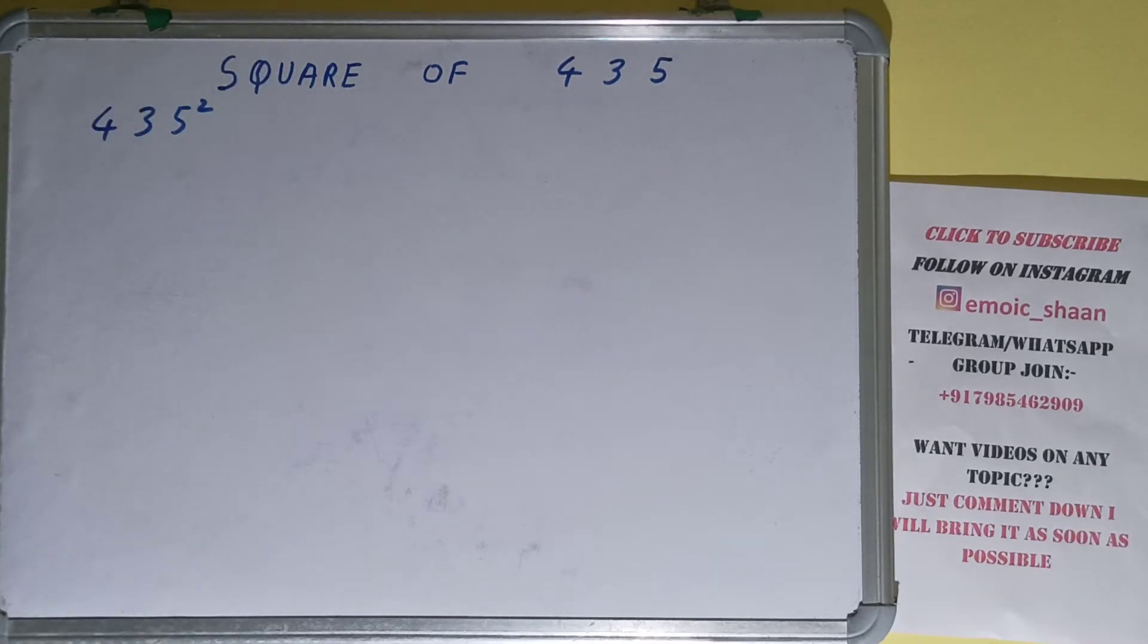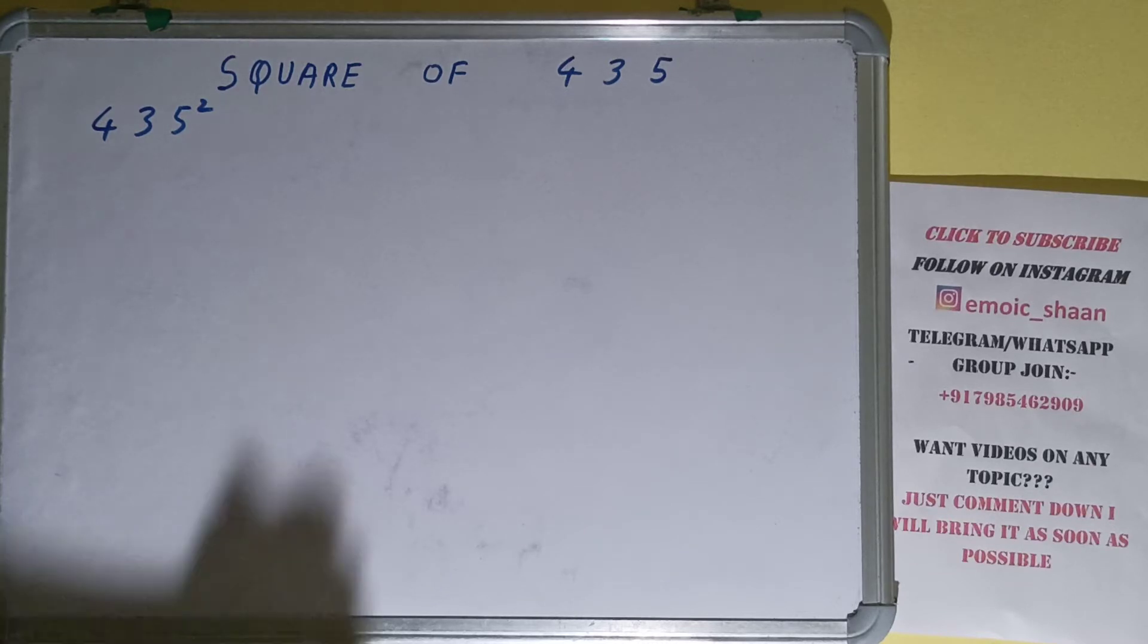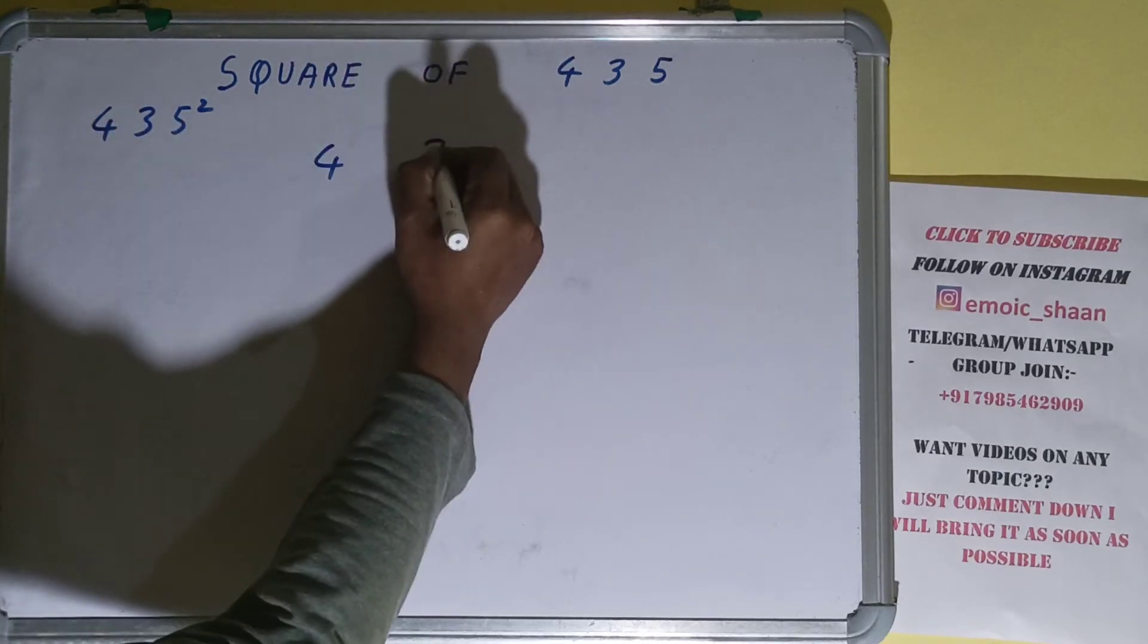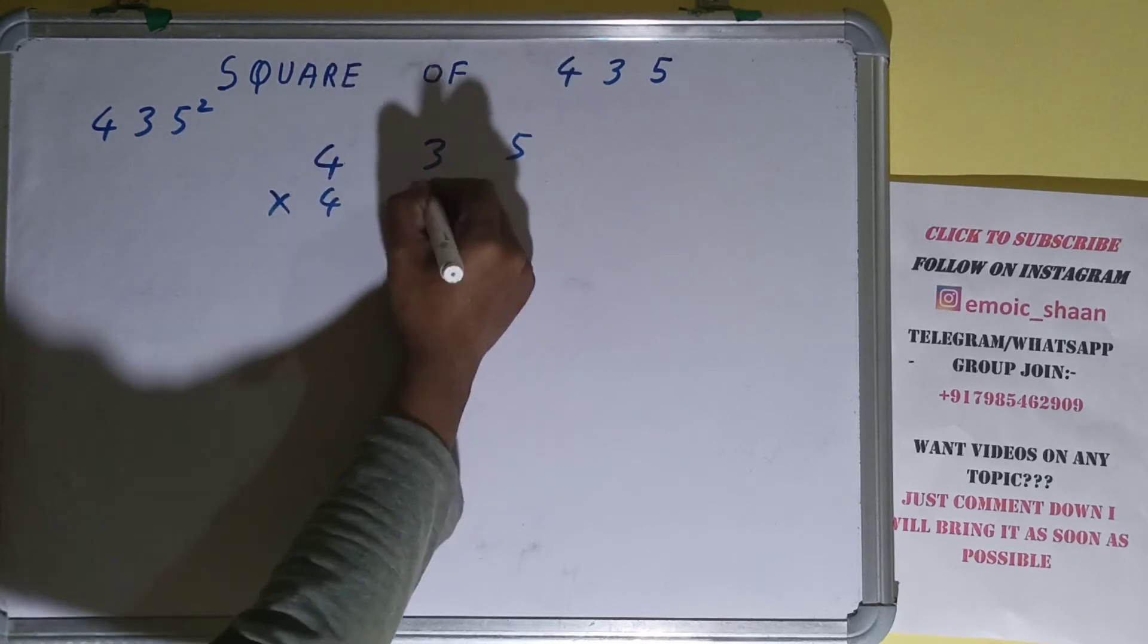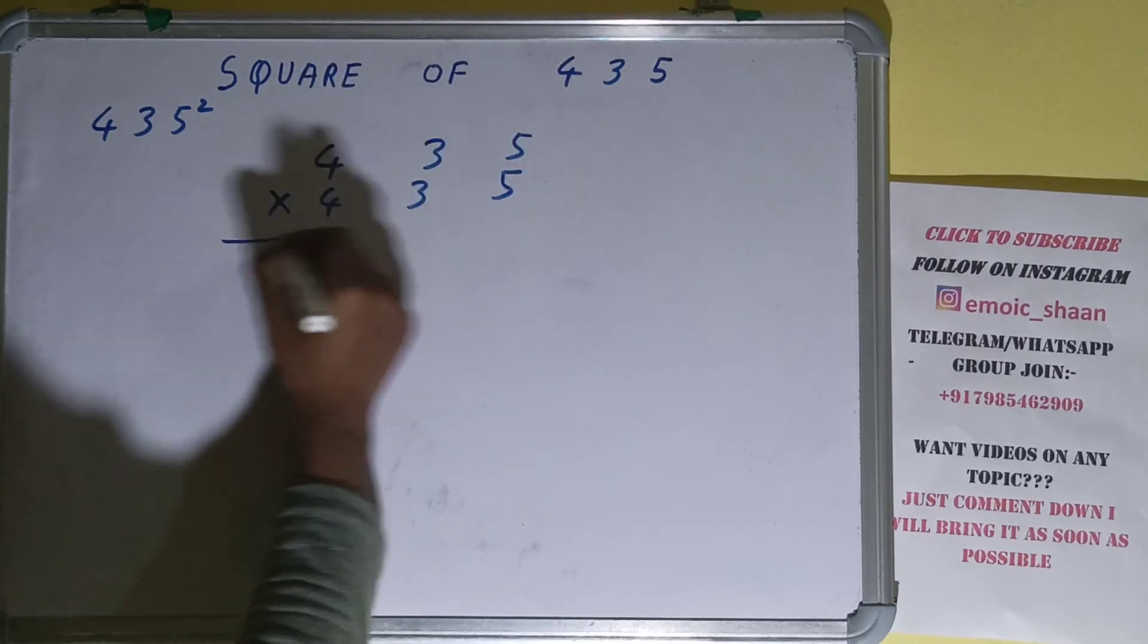Now moving on to the solution. Square basically means multiplying the number by itself. The number here is 435. To find square of it we need to multiply by itself, that is 435, and do the normal multiplication.